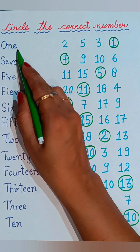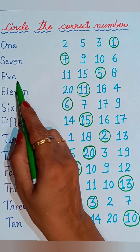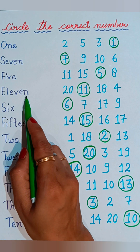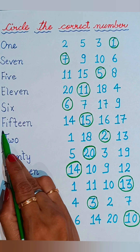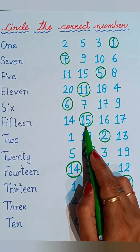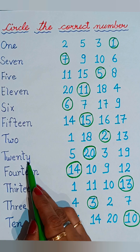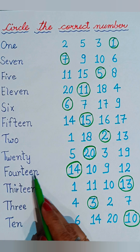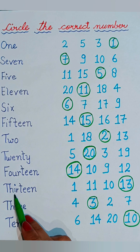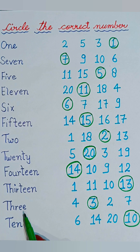Let's repeat with me: O-N-E 1, S-E-V-E-N 7, F-I-V-E 5, E-L-E-V-E-N 11, S-I-X 6, F-I-F-T-E-E-N 15, T-W-O 2, T-W-E-N-T-Y 20, F-O-U-R-T-E-E-N 14, T-H-I-R-T-E-E-N 13, T-H-R-E-E 3, T-E-N 10.